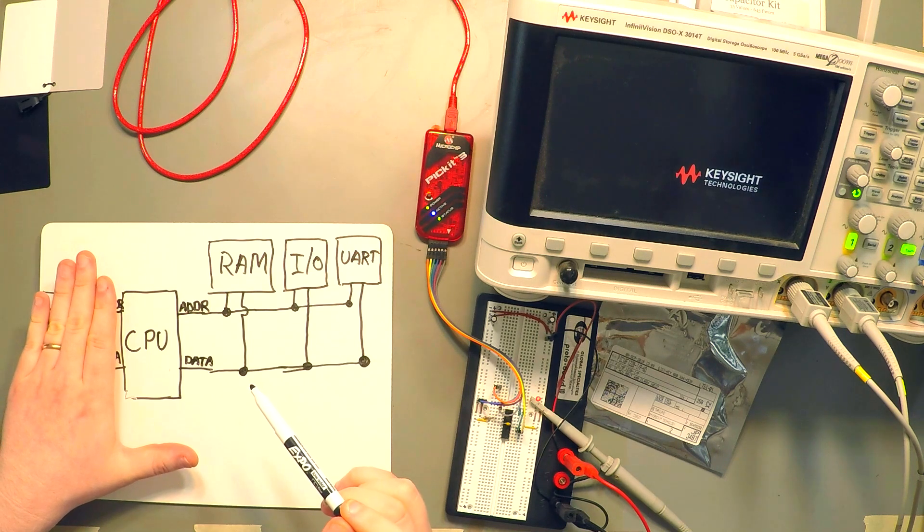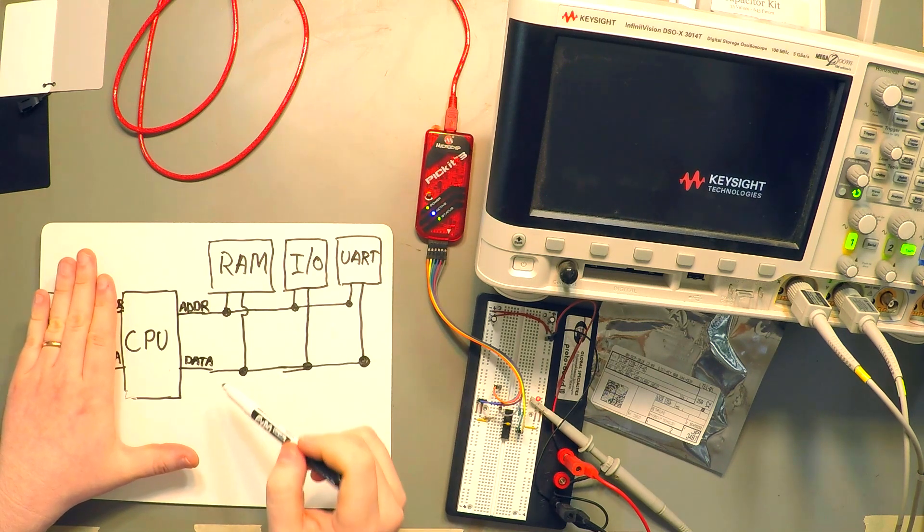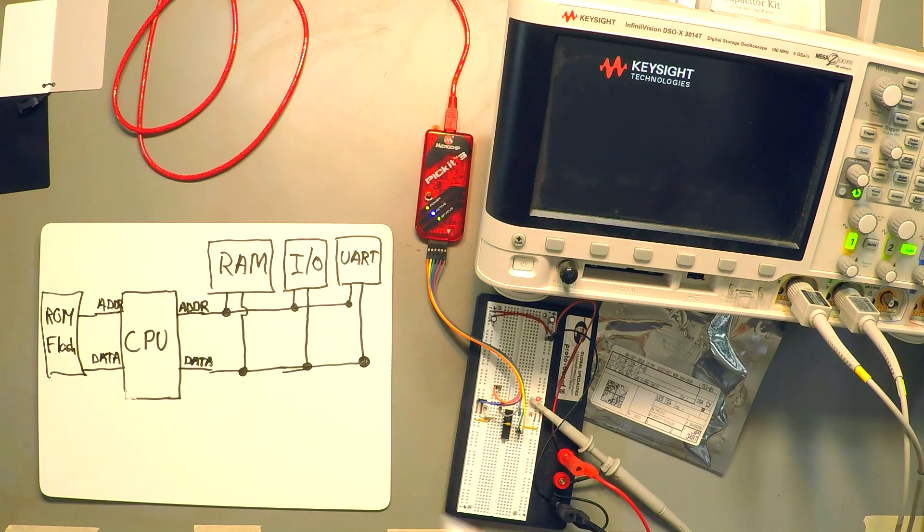the other common architecture that has just a single set of address and data buses is known as Princeton architecture. Or really, I forgot its official name, but it was invented at Princeton.